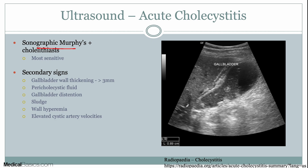In this example, we have multiple gallstones, which are these hyperechoic foci with posterior acoustic shadowing. This example also shows gallbladder distention and sludge, which I'll talk about in a second. And here we have another secondary sign, which is gallbladder wall thickening — from here to here there are two layers of the gallbladder wall, and anything over three millimeters is considered thickened.